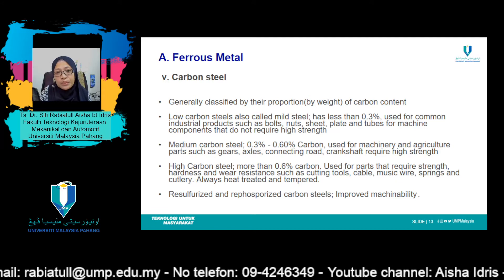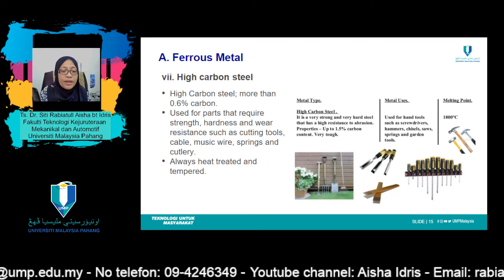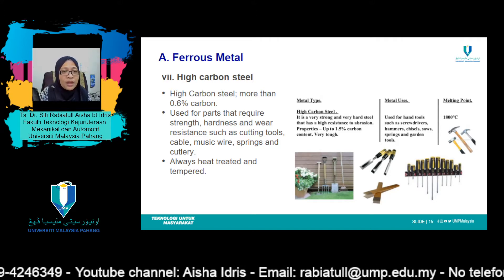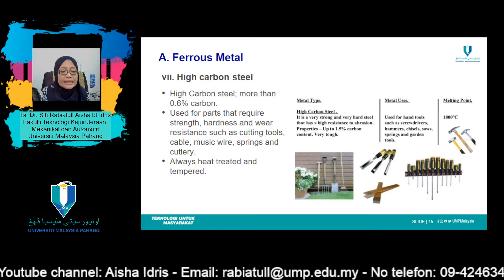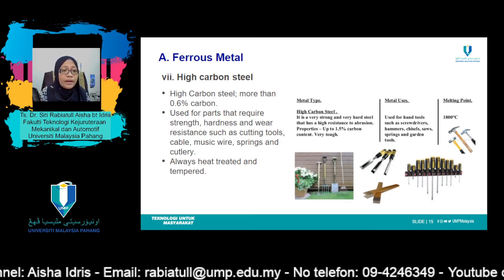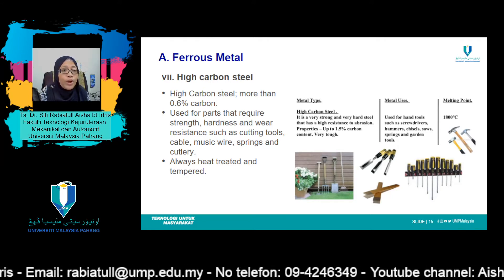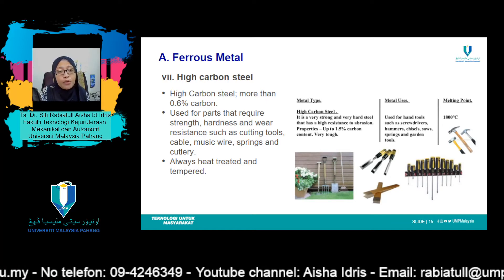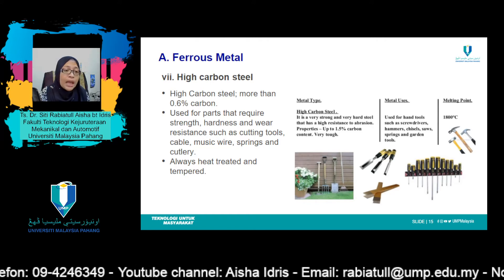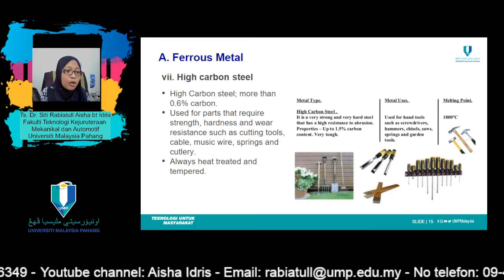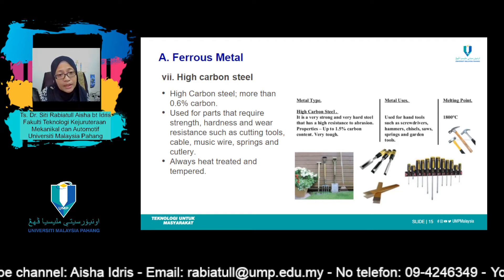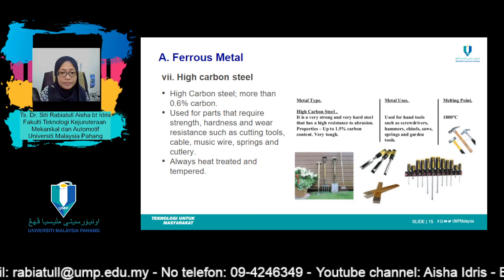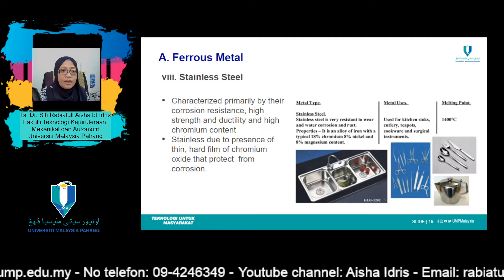High carbon steel normally has more than 0.60 weight percent carbon. These are the hardest, strongest, and least ductile of the carbon steels. They are almost always used in hardened and tempered condition — wear resistant and capable of holding a sharp cutting edge. Tool and die steels are high carbon alloys usually containing chromium, vanadium, tungsten, and molybdenum. These alloying elements combine with carbon to form very hard and wear-resistant carbide compounds. These steels are utilized as cutting tools and dies for forming and shaping materials.